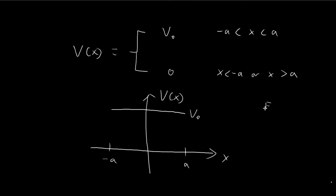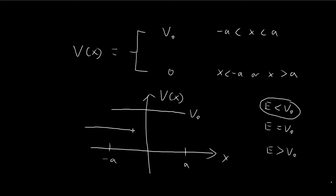The three cases are: the energy is smaller than V₀, the energy is equal to V₀, and the energy is larger than V₀. We're going to start by focusing on the first scenario — the case where the energy level is somewhere below V₀. It must be larger than zero, because if the energy level is smaller than zero, the wave function will not be normalizable. So the energy level must be larger than the minimum of the potential, which in this case is zero. Our energy level is squeezed in between zero and V₀, and we're going to solve the Schrödinger equation for this case.